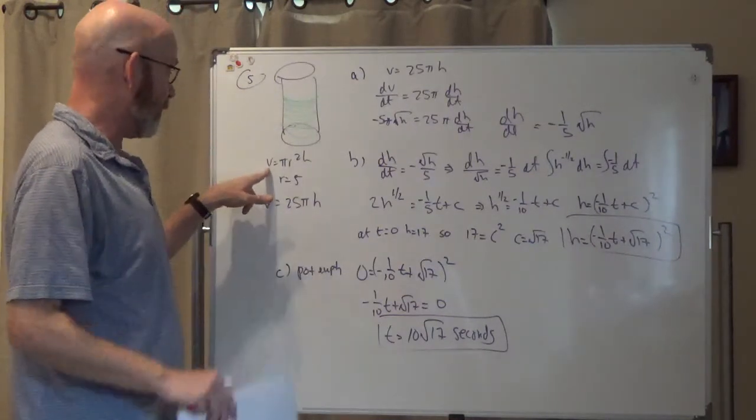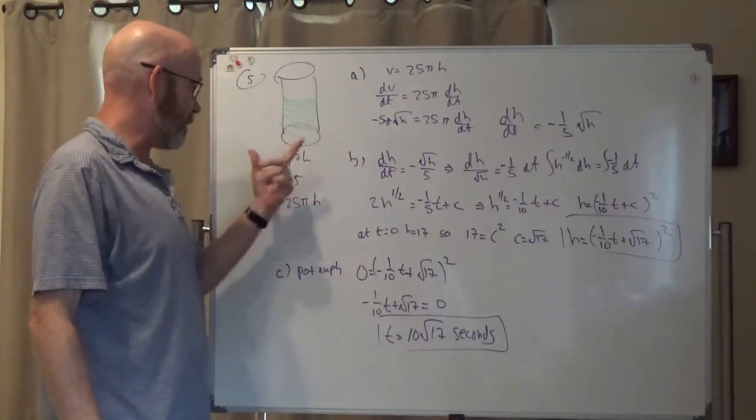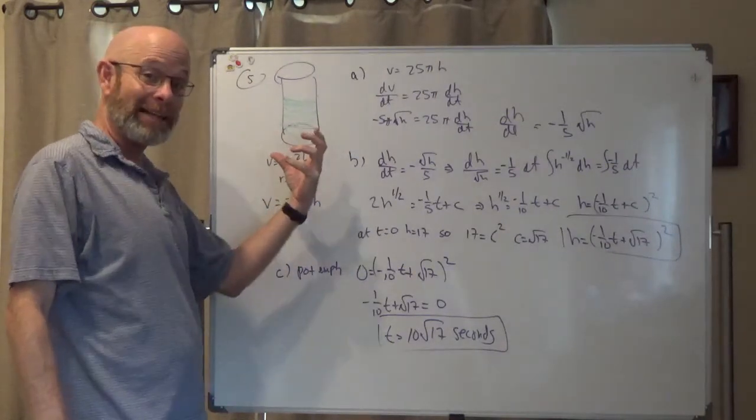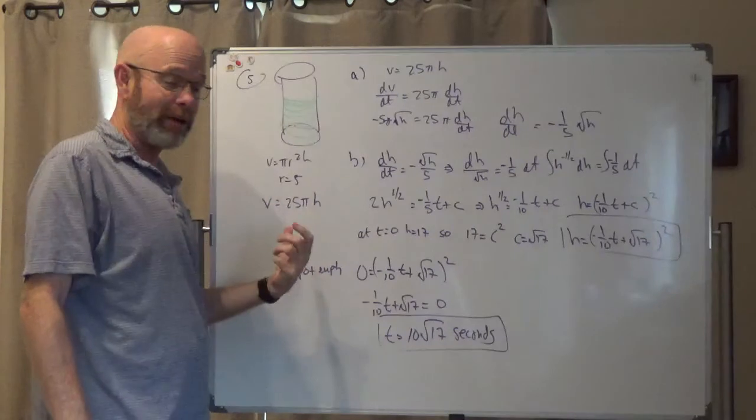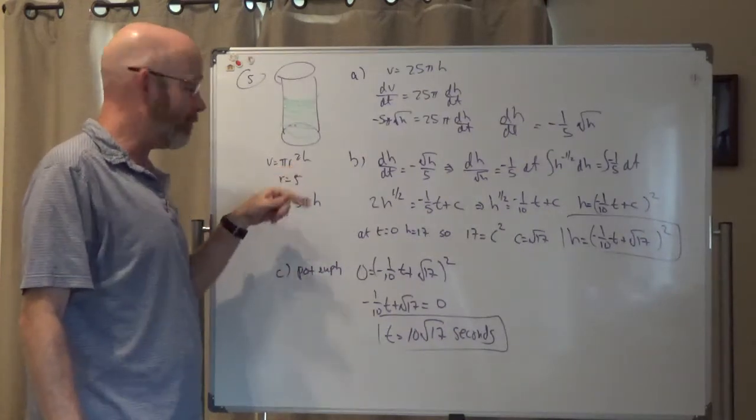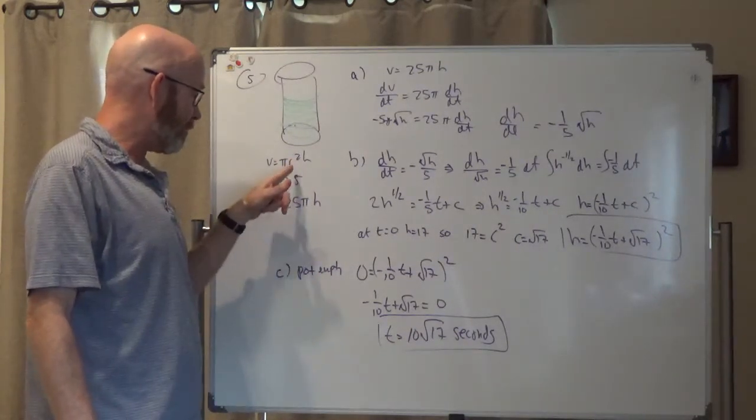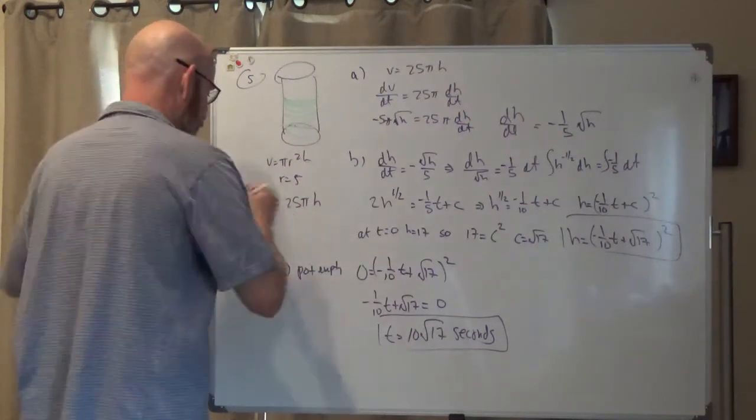You notice when they tell me the volume formula for the cylinder is pi r squared h. Remember that this cylinder, the radius is not changing, so because something's not changing, if something's not changing, you can just plug it right in, so the r becomes a five. So it's just 25 pi h, so that's my formula for volume.